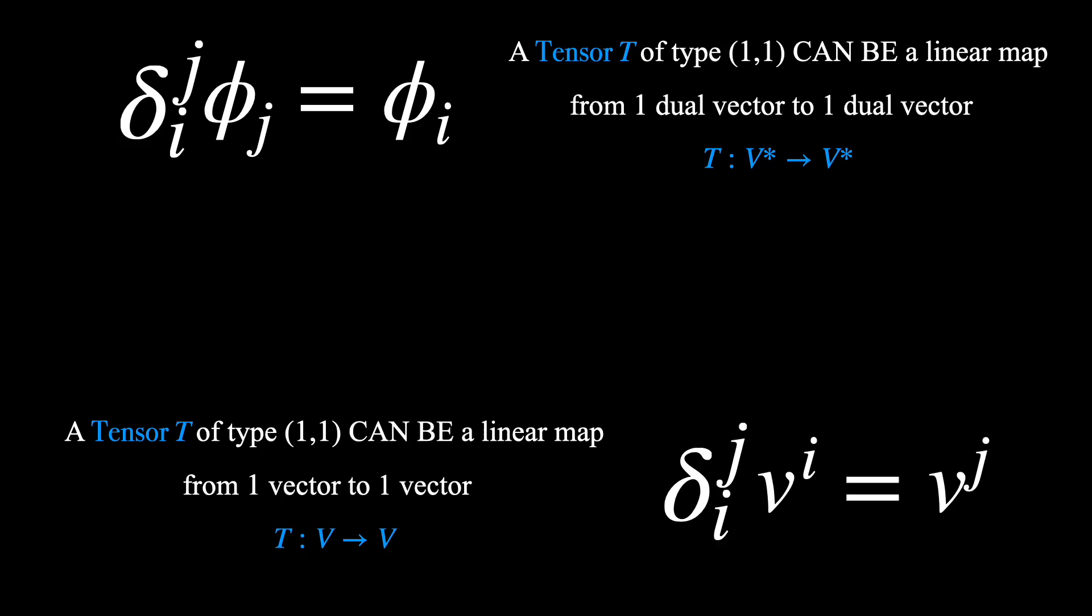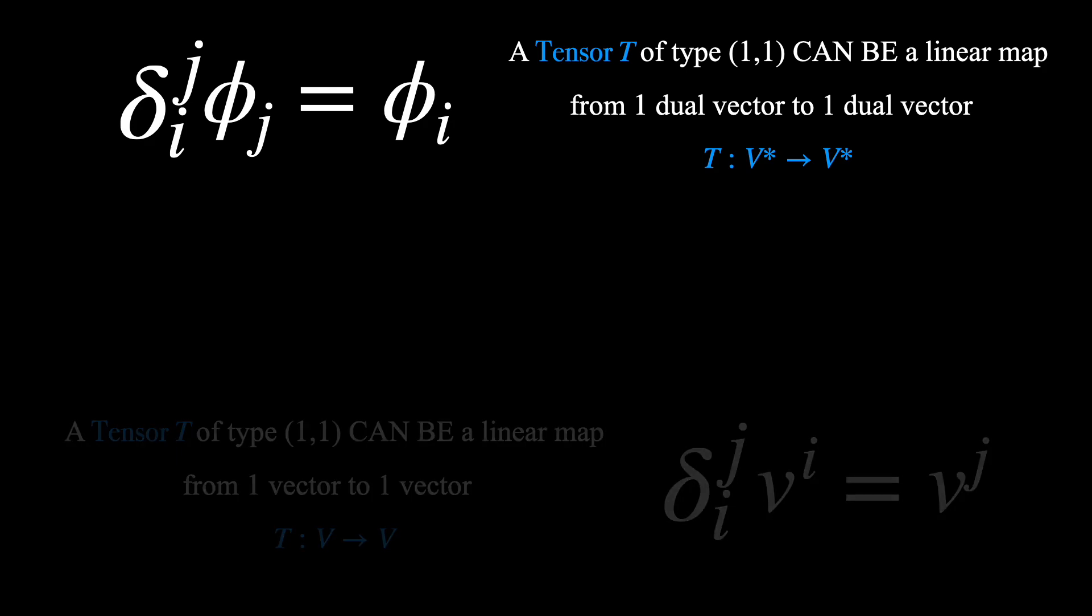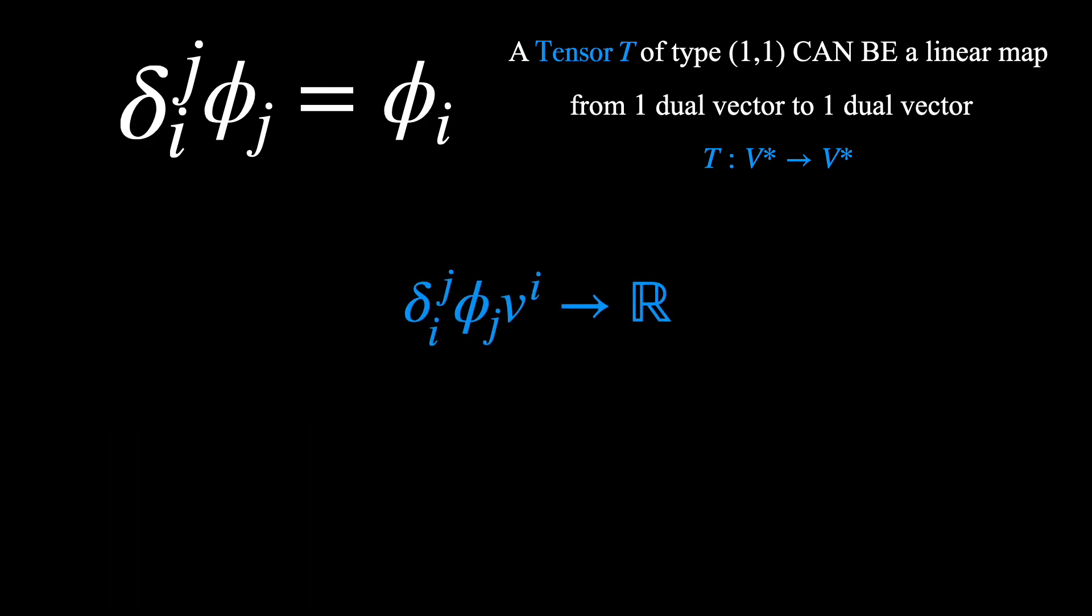We can see this consistency with the Kronecker delta tensor by considering the calculation we just went through a few moments ago. We started with delta i j acting on a dual vector and vector by mapping them to a real number. And we ended with a real number that equals phi sub i times v i.